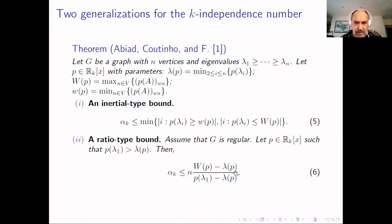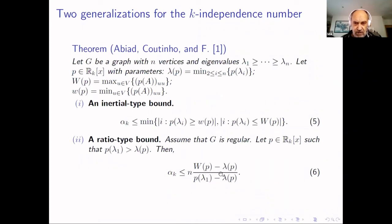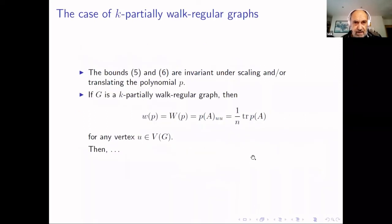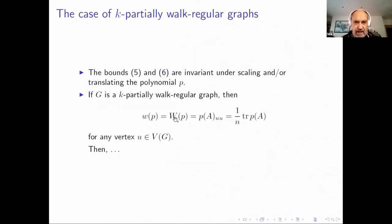For the k-independent number, we have an inertia-type bound that generalizes the Cvetković bound, and also a ratio-type bound that generalizes the Hoffman bound. Note that these bounds are invariant under scaling or translating the polynomial — you can multiply by a constant or translate by a constant and get the same bound. In particular, if G is k-partially walk-regular, the diagonal of the matrix P(A) is constant and equals the trace of P(A) divided by n.